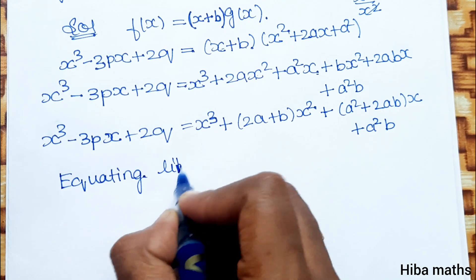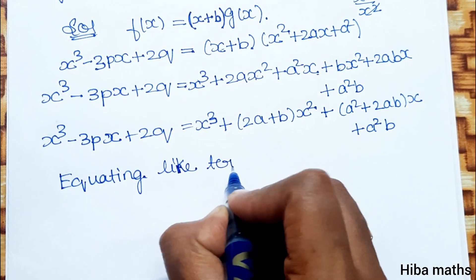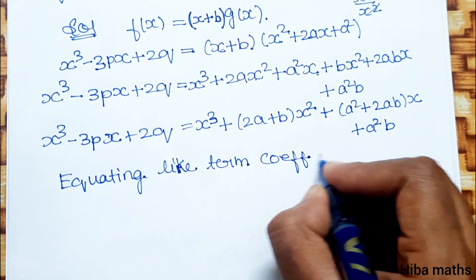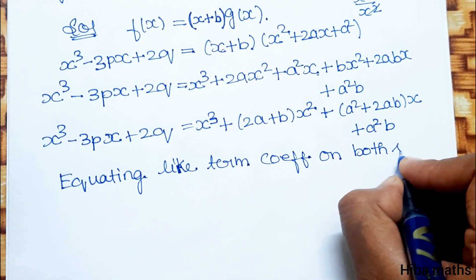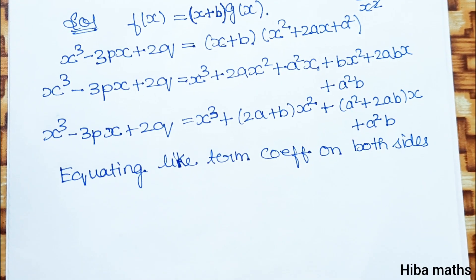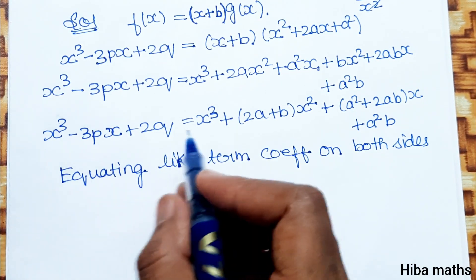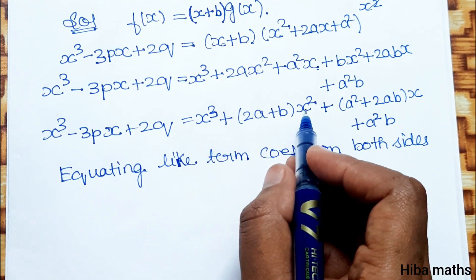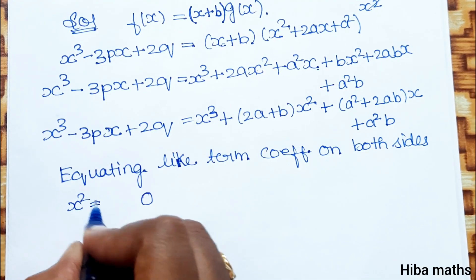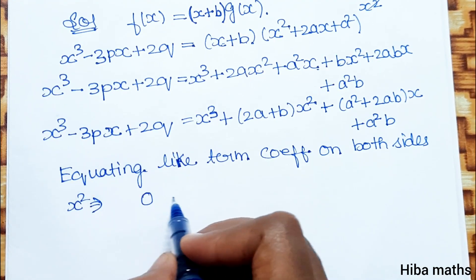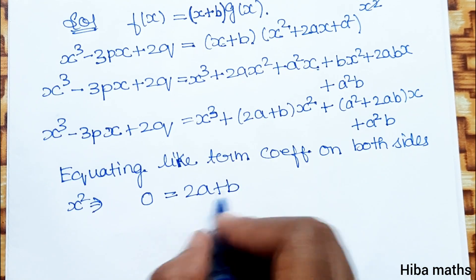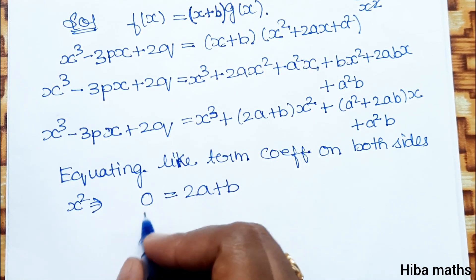Equating like terms — coefficients of x square: on the left side the coefficient of x square is 0, and on the right side it is 2a plus b. So 0 equals 2a plus b, which gives b equals minus 2a.